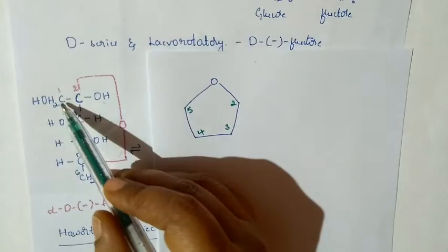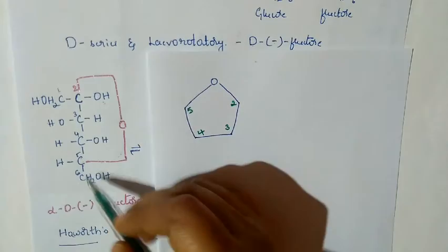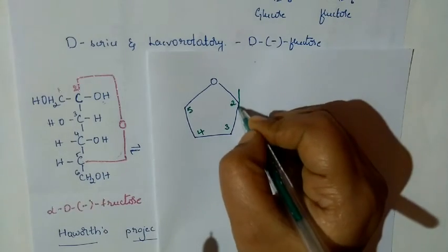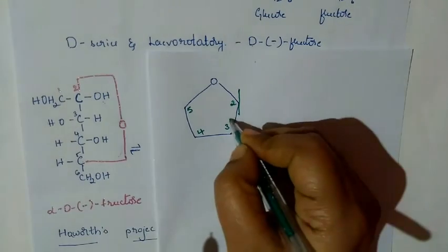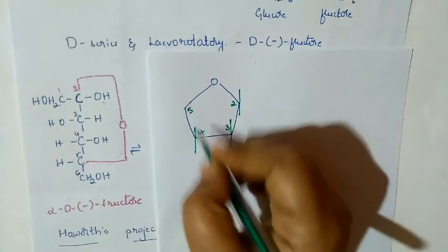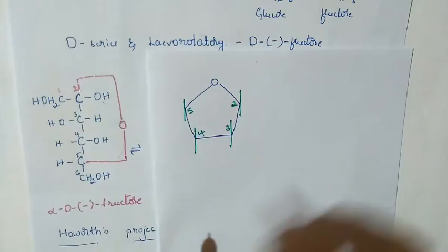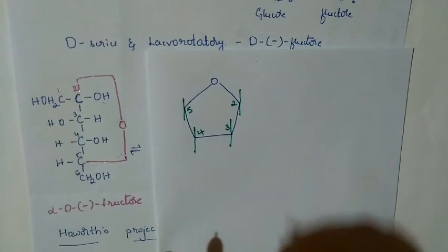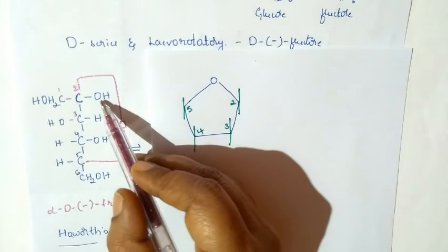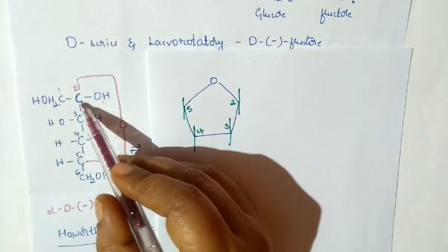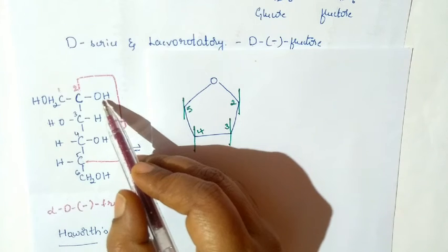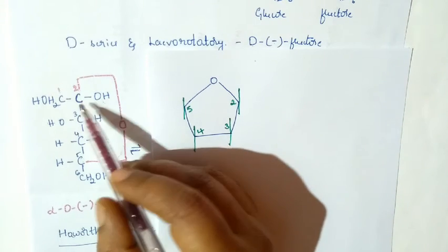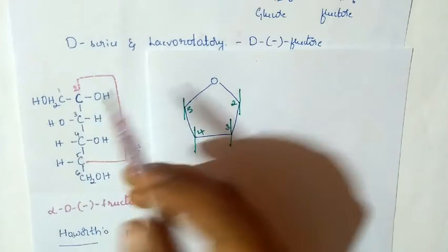The first carbon is bonded to the second carbon, and the sixth carbon is bonded to the fifth carbon. These will come above and below the plane. So we shall write down those things — whatever is on the right side will come below, and whatever is on the left side will come above.